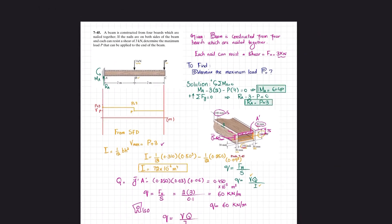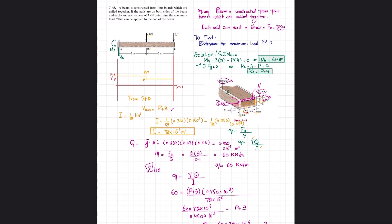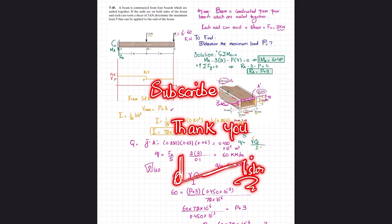So the maximum load P that can be applied to the end of the beam is P equals 6.60 kilonewton. That was all about problem 7-45. I hope you enjoyed this video. If you are new to my channel, please subscribe and press the bell icon for notifications about my latest videos. If you have any questions, you can ask in the comment section. Thank you for watching.